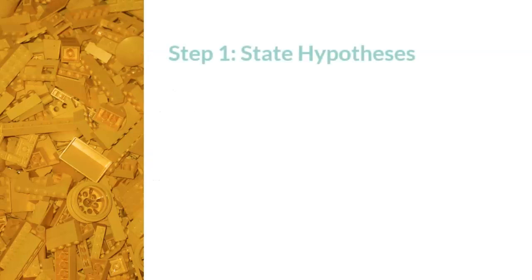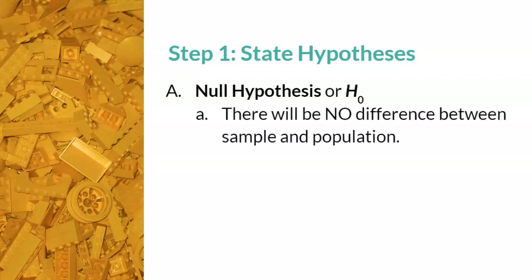The process of hypothesis testing started with the yellow Lego, which is the state hypothesis. There will be two types. The word null means zero or nothing, and statistical notation is h subscript o. In this case, h is for hypothesis and the o is for nothing or zero. In other words, we are hypothesizing that there will be no difference between the sample and population.